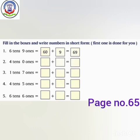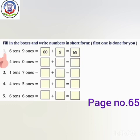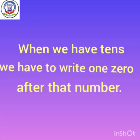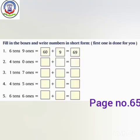Now we will do another exercise: fill in the boxes and write numbers in short form. Number 1 — how many 10s do we have? We have 6 tens. How many 1s do we have? We have 9 ones. When we have tens, we write a 0 after that number, so we put 0 after 6 and it becomes 60. 60 plus 9 equals 69.